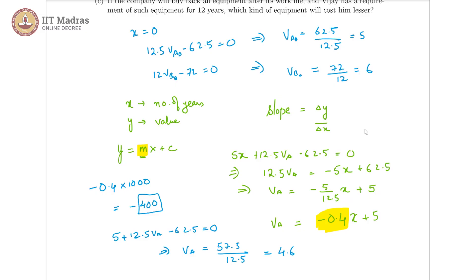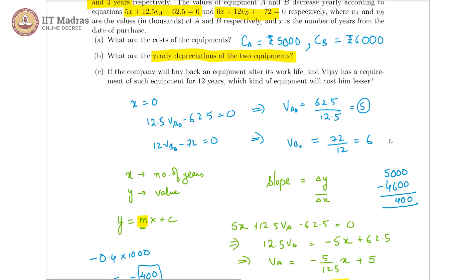This gives us VA is equal to 57.5 by 12.5 which is equal to 4.6. So VA was originally 5, that means it was originally 5,000 rupees, and after one year it became 4.6 which is 4,600 rupees. So the difference is 400 rupees. So that is the yearly depreciation for the first equipment.